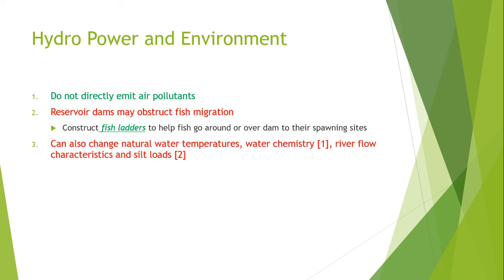Most hydroelectric power plants have a dam or reservoir. These structures affect local populations, and operating a hydroelectric power plant may also change the water temperature and the flow of water in the rivers. These changes may harm native plants and animals in the river, and the human population on land is also affected.